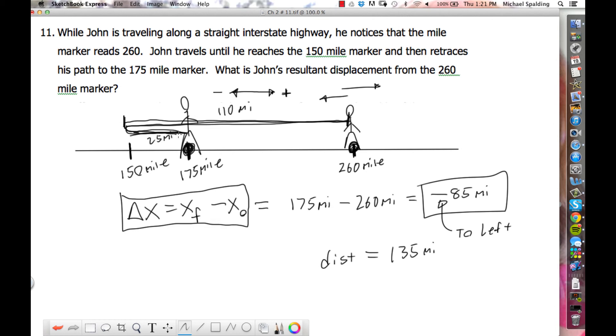If there's a change of direction, then distance and displacement are not the same. You have to add them up - the distance to there is 110 and then the distance back is 25.